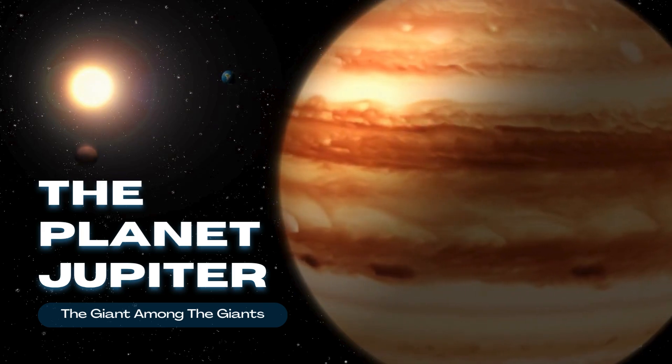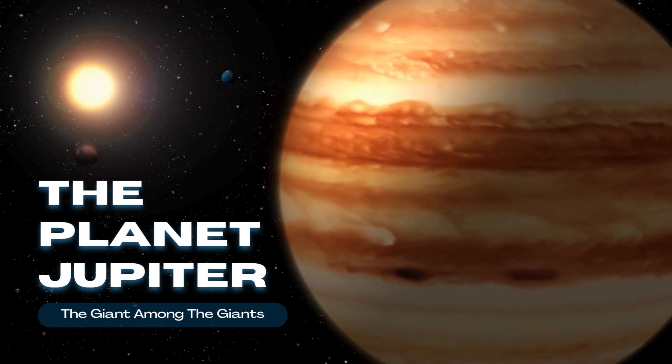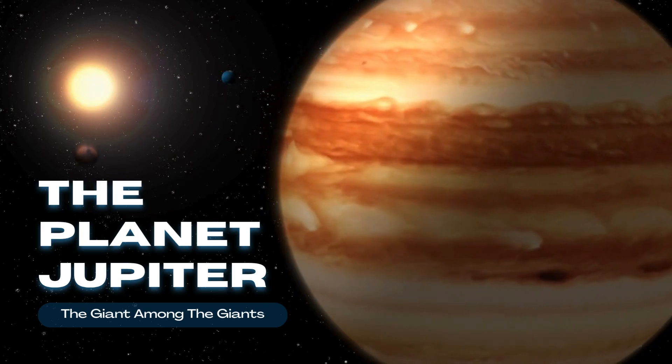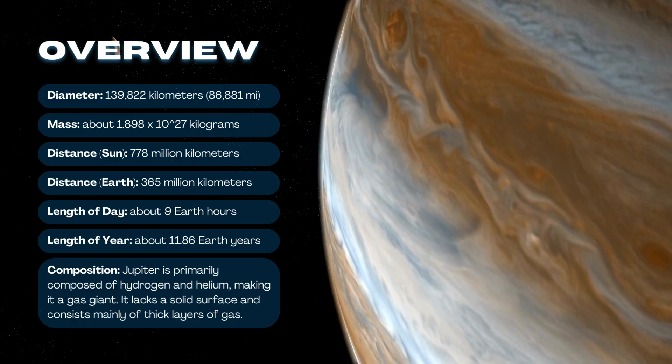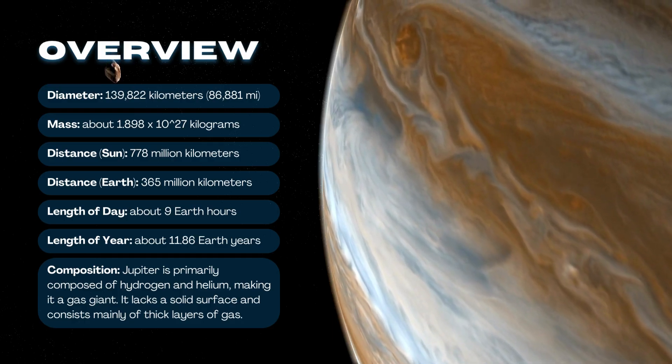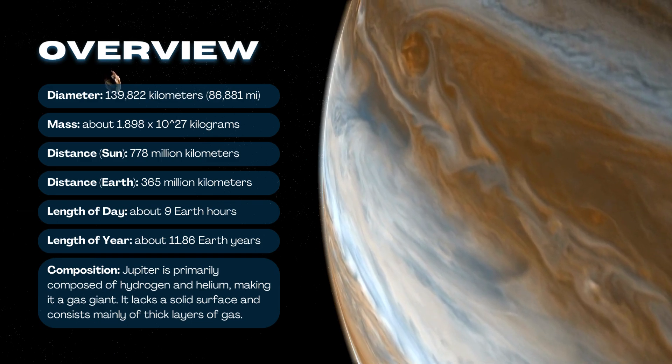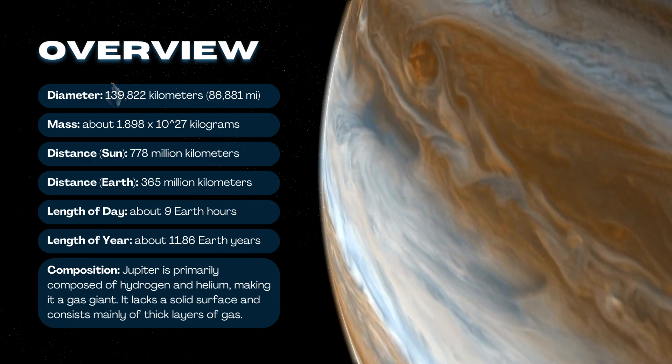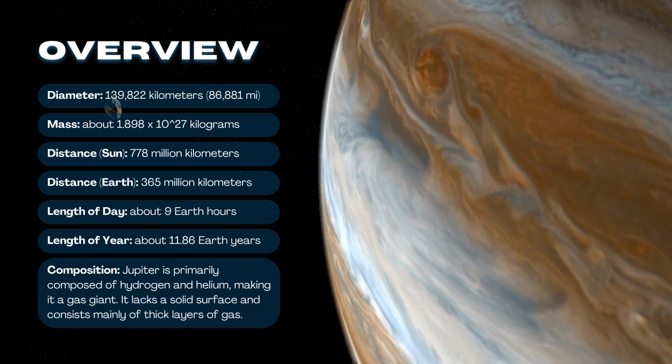The planet Jupiter, the giant among the giants. Composition: Jupiter is primarily composed of hydrogen and helium, making it a gas giant. It lacks a solid surface and consists mainly of thick layers of gas.